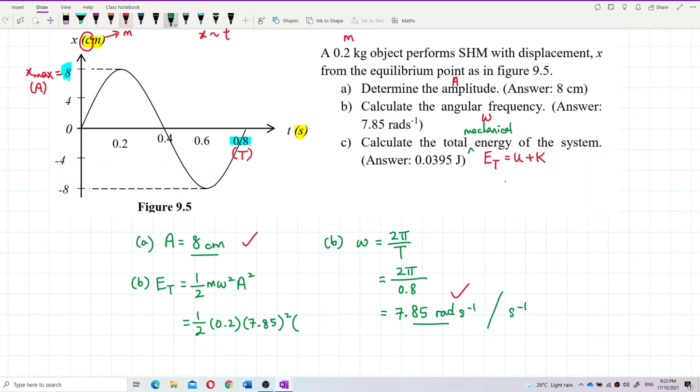Half m omega square amplitude square. Very simple. So what is your mass? Mass is 0.2. 0.2. What is your omega? Omega is 7.85 square. And then, your amplitude. Oh. Centimeter. You see that? You need to change to meter. So you need to change to meter. So divide by 100. It is 0.08 meter. Because your energy is Joule. Understand or not? Joule. Joule lah.